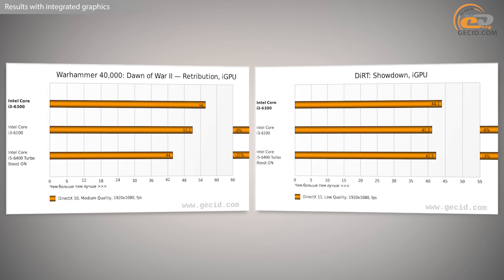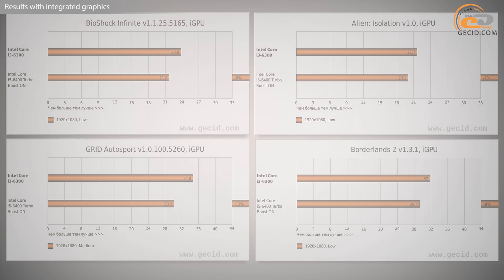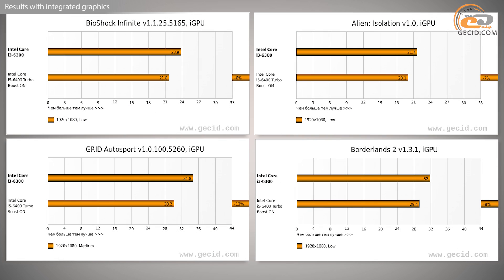As for the integrated graphics core, it is a bit faster than that of the Intel Core i3-6100. However, the additional 6% efficiency still does not allow comfortable gameplay in resource-consuming AAA projects, even at minimum settings.